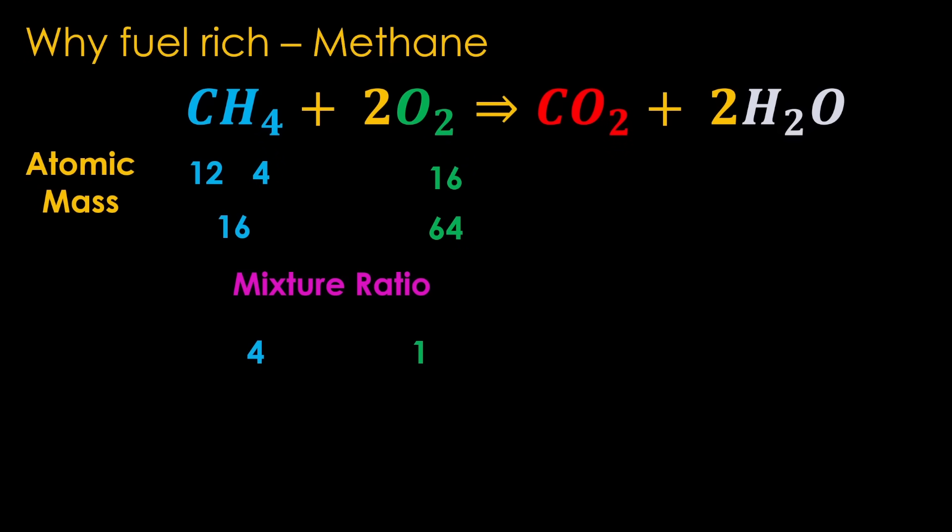Does running fuel-rich increase specific impulse for methalox? Carbon dioxide has an atomic mass of 44 and each water molecule has a mass of 18, so the average is 26.6 — more than the atomic mass of methane at 16, but not the huge difference that hydrogen has. Running 10% extra methane reduces the average atomic mass from 26.6 to 25.5, worth about a 0.6% increase in specific impulse. Going to a lower mixture ratio than 3.6 results in both lower thrust and lower specific impulse, so that's why 3.6 is a common choice.